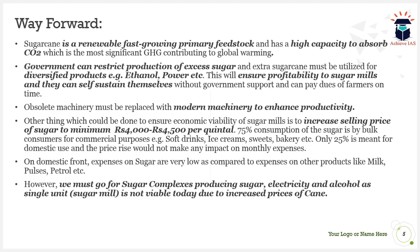Regarding the way forward, sugarcane is a fast-growing primary feedstock with high capacity to absorb carbon dioxide, a main greenhouse gas contributing to global warming. Sugarcane farms act as carbon sinks, so its production must be encouraged. However, the government can also restrict excess sugar production, and extra sugarcane must be utilized for diversified products — alcohol, ethanol, and electricity — ensuring profitability so mills can sustain themselves and pay farmers on time without government intervention.